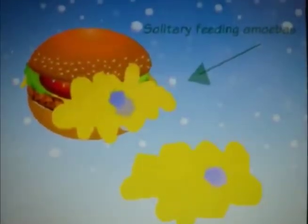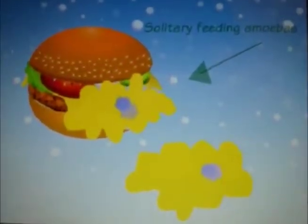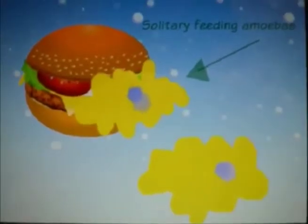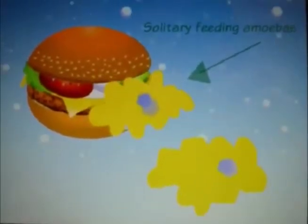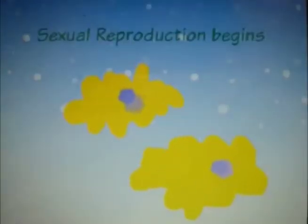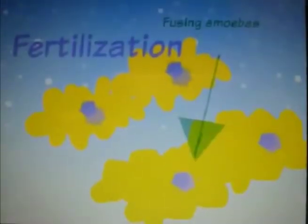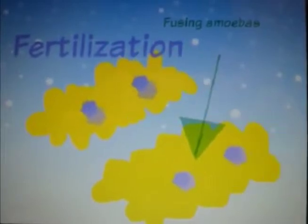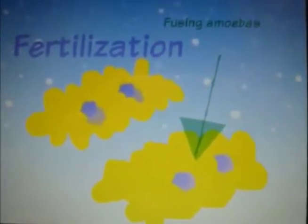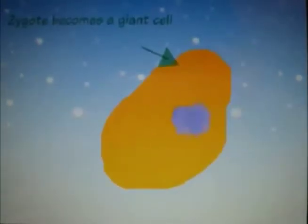The next cycle of a cellular slime mold begins with solitary amoebas in the feeding stage. Sexual reproduction occurs when fertilization takes place and two haploid amoebas fuse to form a zygote. The zygote becomes a giant cell and develops a resistant wall.